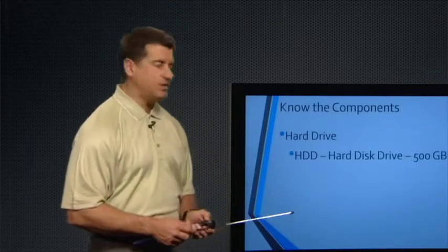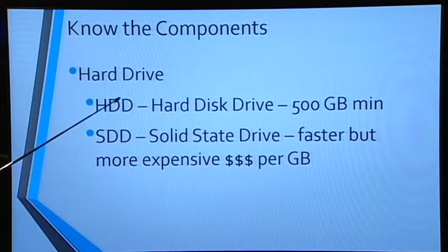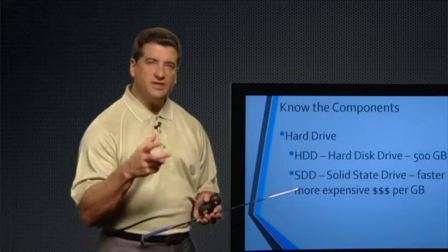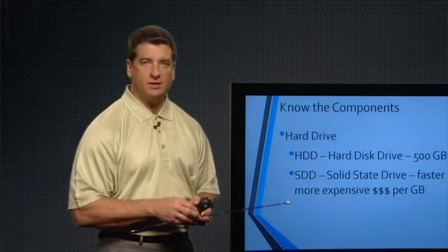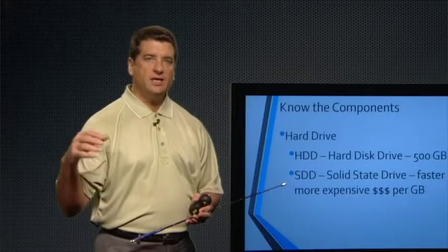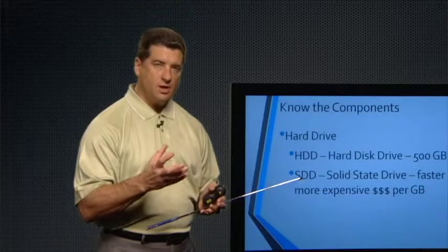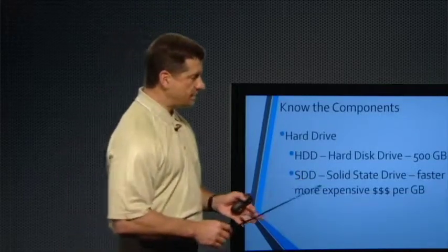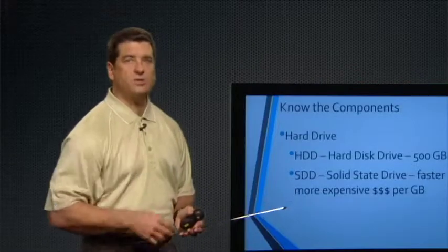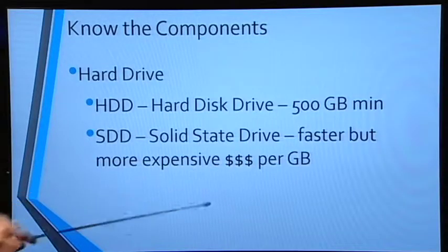Another type of drive is SSD — solid state drive. The key difference is that the hard disk drive has physical platters that spin to retrieve data, while the solid state drive stores things electronically — similar in concept to your USB drive. Because things are electronically stored, SSD drives are much faster. We don't have to spin anything to get to our data. Of course, if you want faster, you're looking at more dollar signs.